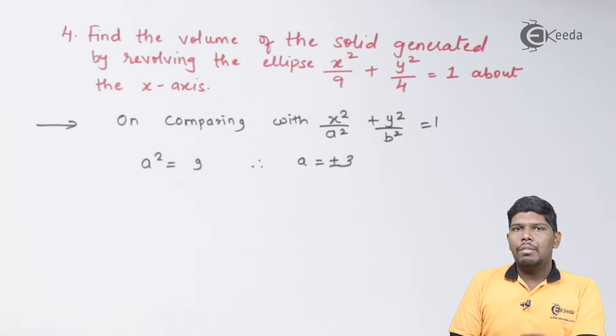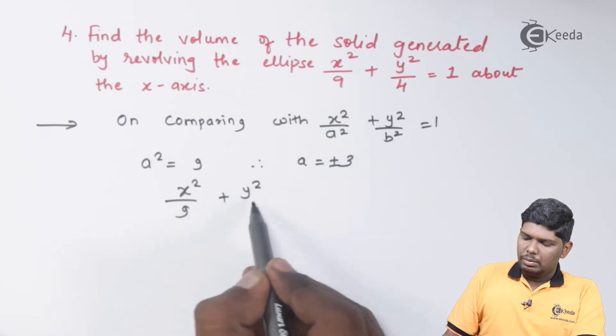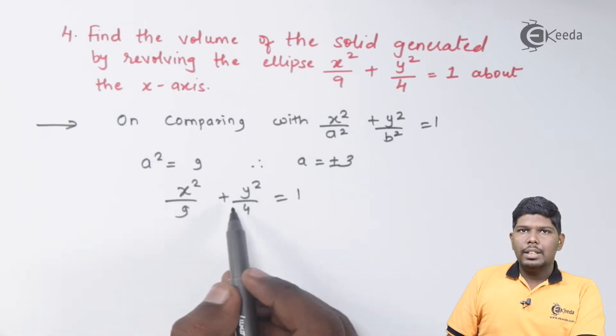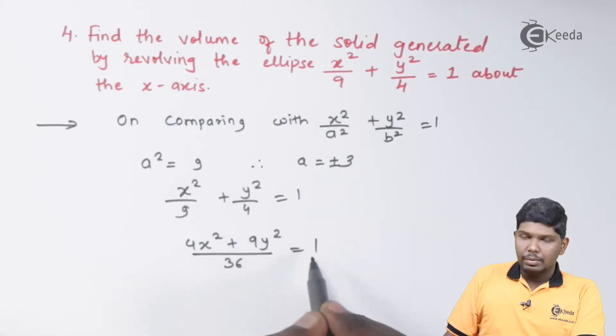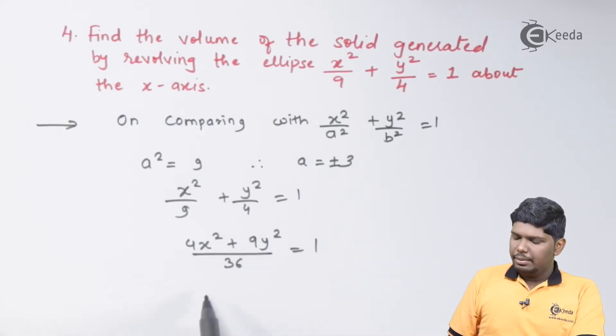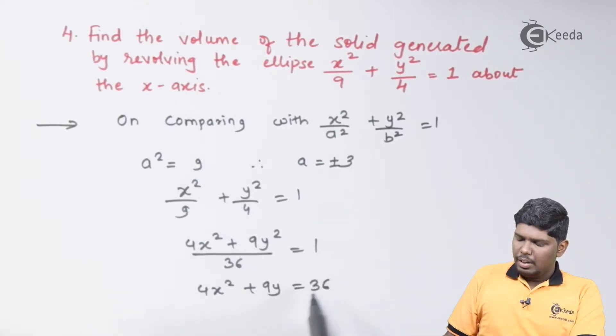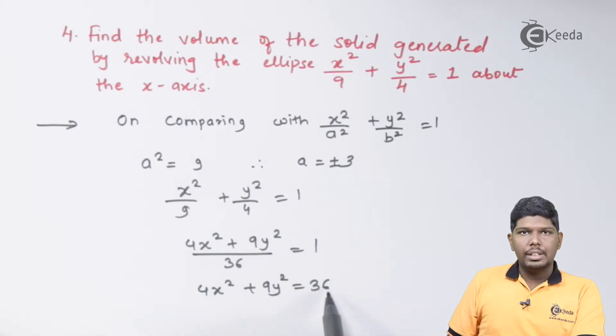The next step is to find the value of y² from the given equation of the curve. On cross multiplication, taking 36 on the right-hand side, we have 4x² + 9y² = 36. Transferring 4x² on the right-hand side,